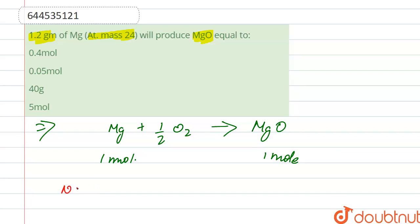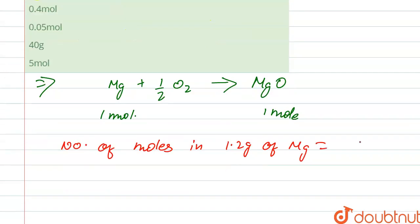moles—first we calculate the number of moles in 1.2 gram of Mg. So number of moles is calculated by given weight, that is 1.2, divided by molar atomic weight of Mg, which is given as 24. So it is